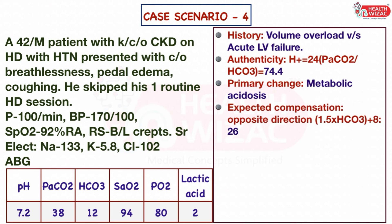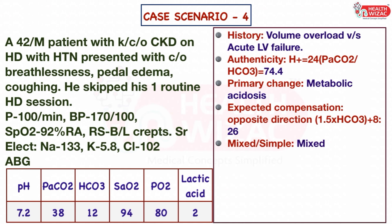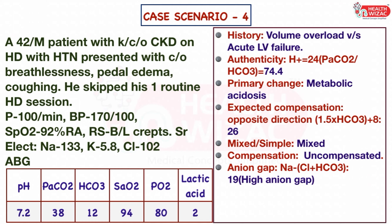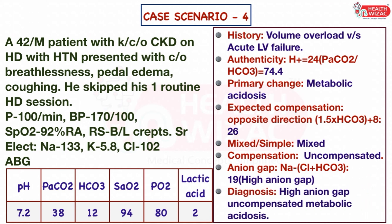Step 4 — calculated fall in PaCO2 is 26, but the sample shows PaCO2 of 38, which falls in the normal range of 35 to 45. Step 5 — the disorder is mixed because the same direction rule is not followed; fall in bicarbonate should be compensated by fall in PaCO2, but the sample shows normal PaCO2. Type of compensation is uncompensated as PaCO2 is within normal range and bicarbonate is abnormal. Step 6 — calculated anion gap is 19, which is high. Final diagnosis: high anion gap, uncompensated metabolic acidosis.